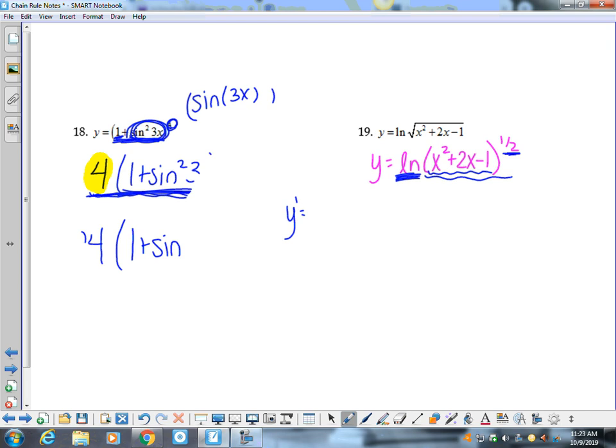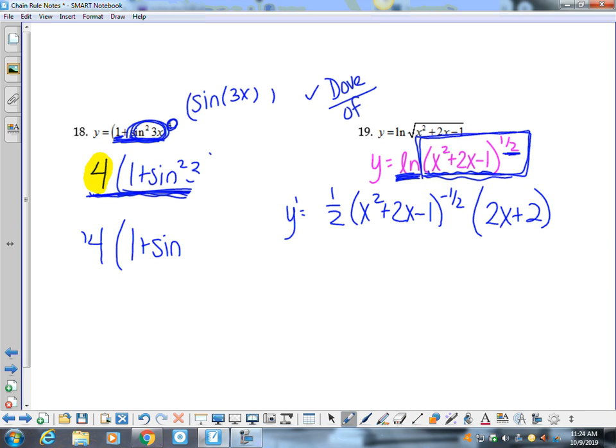Okay. So to take the derivative of an ln, I do dove over of. So dove is the derivative of the of. So the derivative of the of is just your power roll. Times the inside. Or times the derivative of the inside. Okay. So that was my dove. That's the derivative of the of. And the derivative of the of is a turduck. So I did my power, and then I did the duck. Okay. So that's dove over my of.